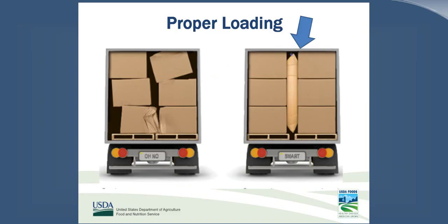Proper loading requires that the trailer be properly loaded using load security airbags, low lock bars, quality pallets, interlock stacking methods, and effective shrink wrapping. Offset loading should be expected as best practice for transporting USDA food. If after inspecting the load you notice some product has been damaged during transit or there is a quantity discrepancy, you can accept the load but remember to note the damaged product and quantity on the bill of lading and then file a complaint in Web.